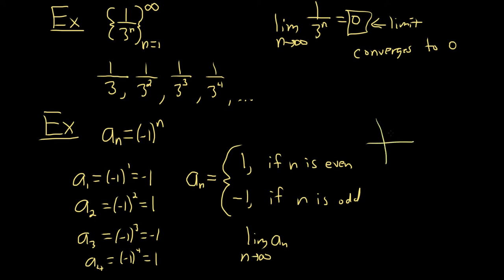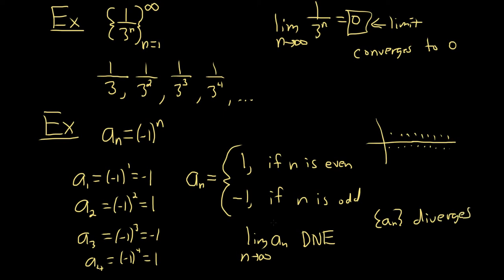If you were to graph it, it would just show alternating dots at 1 and -1 forever, never getting close to anything, because it's always 1 or negative 1. So this limit does not exist, and we say the sequence diverges. To summarize: a sequence converges if when you take the limit you get a number, and it diverges if you don't get a number.